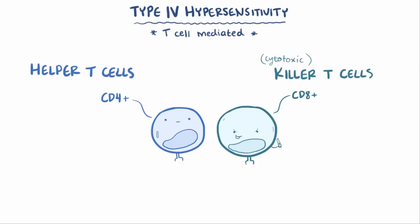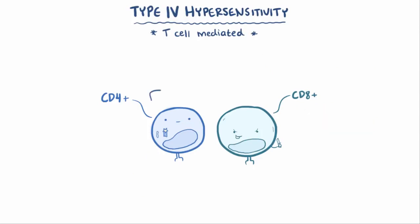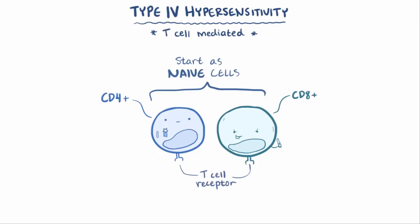CD8-positive killer T cells do exactly what their name implies — they kill things. They're the silent assassins of the immune system that go after very specific targets. In contrast, CD4-positive T cells locally release cytokines, which are small proteins that can stimulate or inhibit other cells, so they act like little army generals coordinating immune cells around them. Both types start off as naive T cells because their T cell receptor, or TCR, hasn't yet bound to their target antigen — that specific molecule it can bind to.